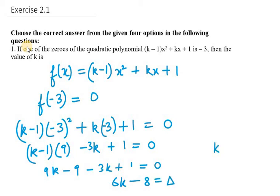So what we get is k equals 8/6. So this is our answer for question number 1, or you can reduce this and k can be written as 4/3.